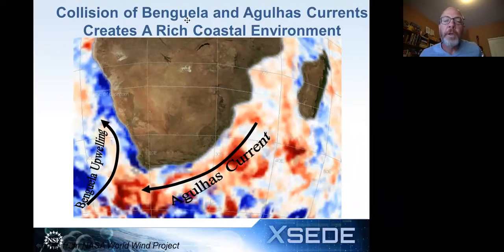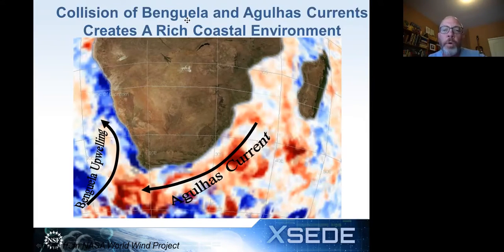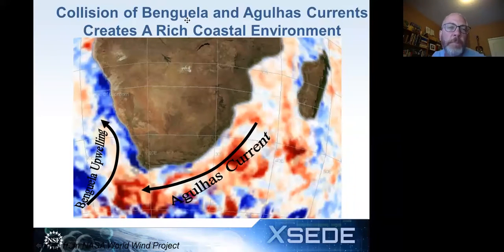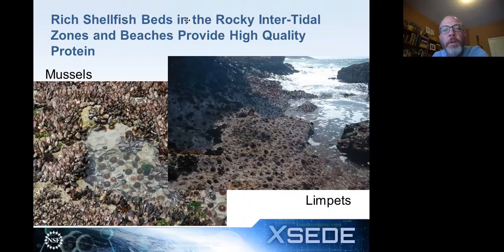The South African coast also has one of the richest intertidal zones in the world. One driving cause of that richness is the collision of the warm Agulhas Current from the Indian Ocean with the cold Benguela upwelling, creating a mix of cold and warm water that produces very high diversity and biomass of collectible intertidal shellfish. If you've got the cognition to figure out how to collect that food safely, you now have a very rich source of protein.